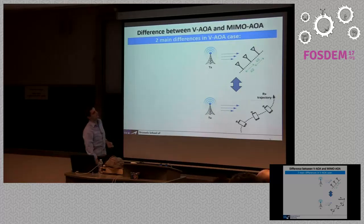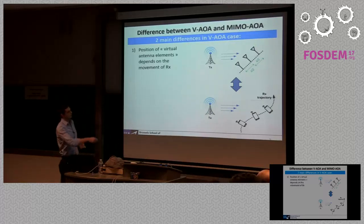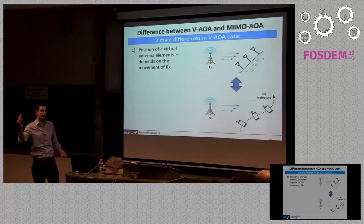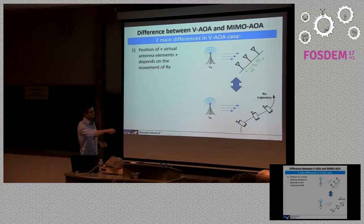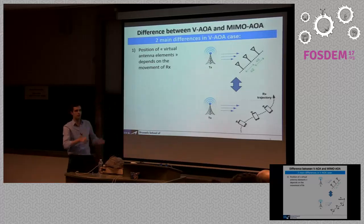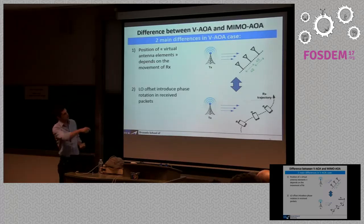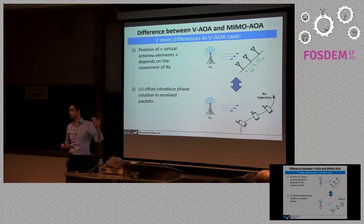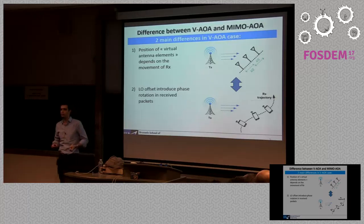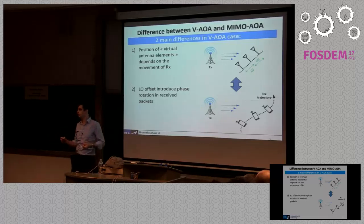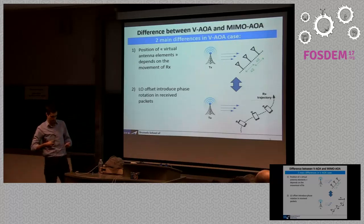Looking at a regular MIMO array versus this virtual MIMO idea, there are two main differences. In a regular MIMO array, you know the position of your antennas — they're along a linear array with known spacing. You don't know this in a virtual MIMO case; you're just moving around, so you need to determine where your receiver is each time it receives a data packet. The second problem is frequency offset. In a regular MIMO array, there's no frequency offset between signals at different antennas since they all use the same local oscillator. Here, because you receive signals at different time instants, the frequency offset between transmitter and receiver causes additional phase shift each time you receive a new packet.